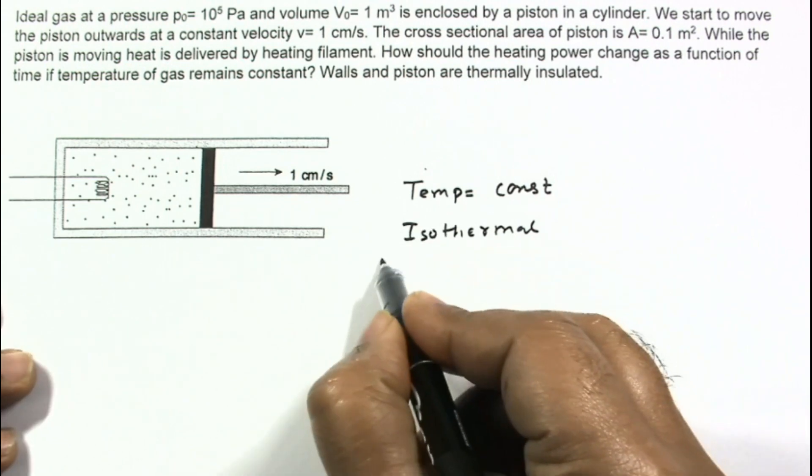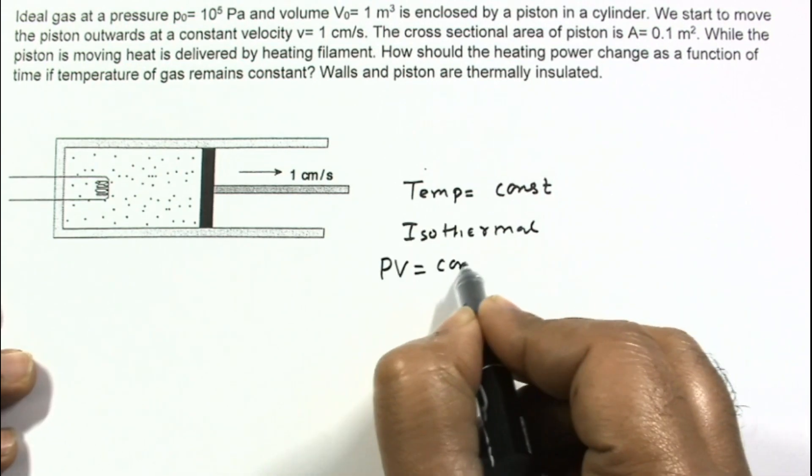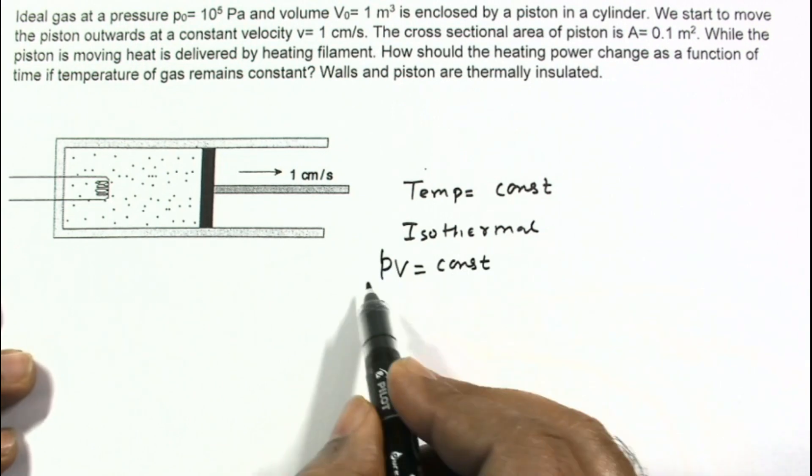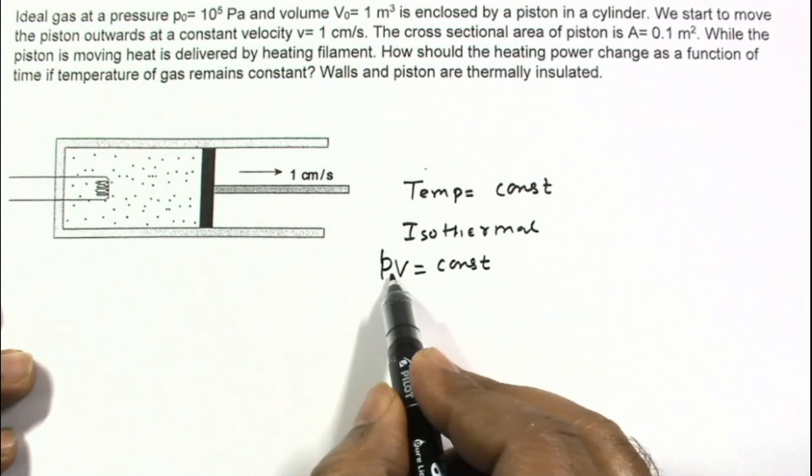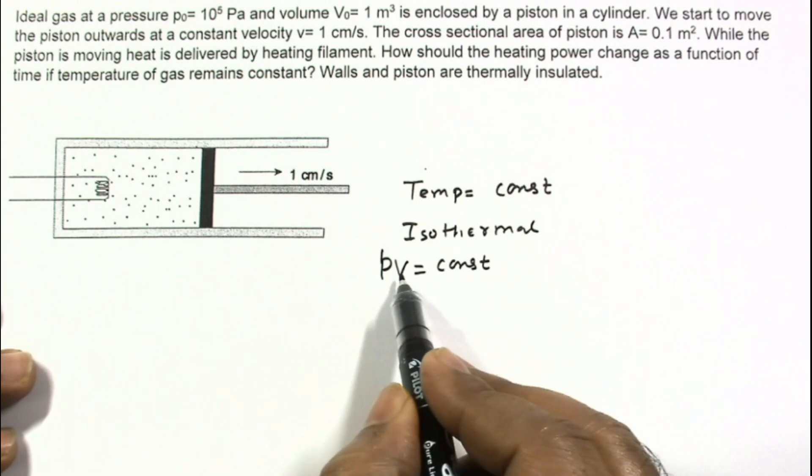And for this isothermal process, we can write PV is equal to constant. This pressure and volume multiplication is constant for isothermal process.